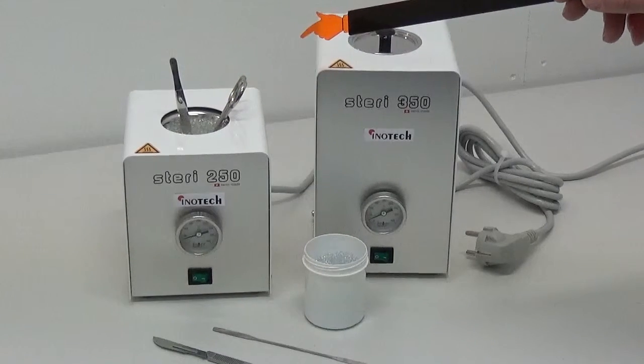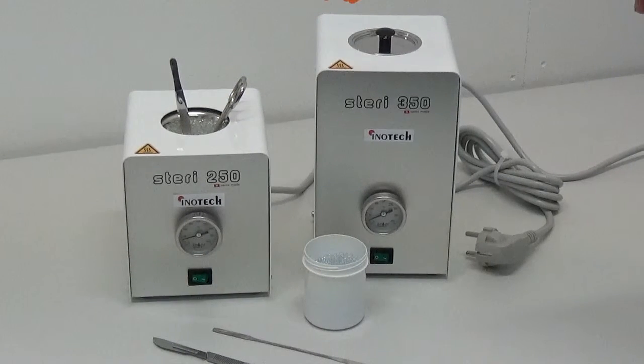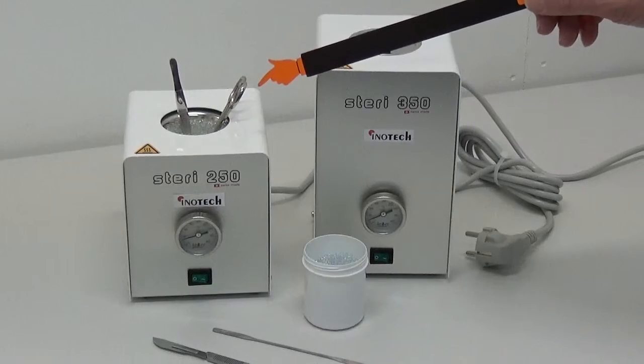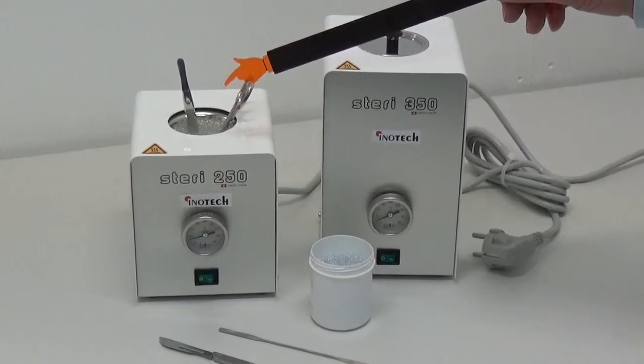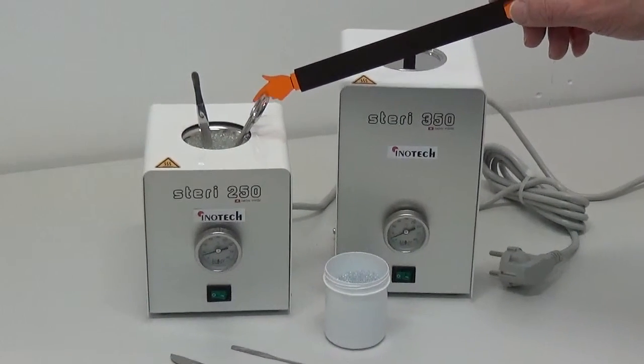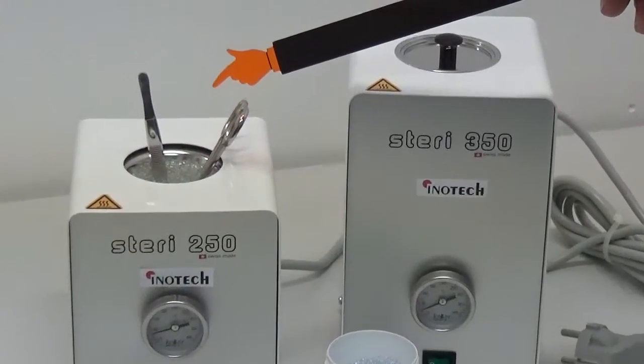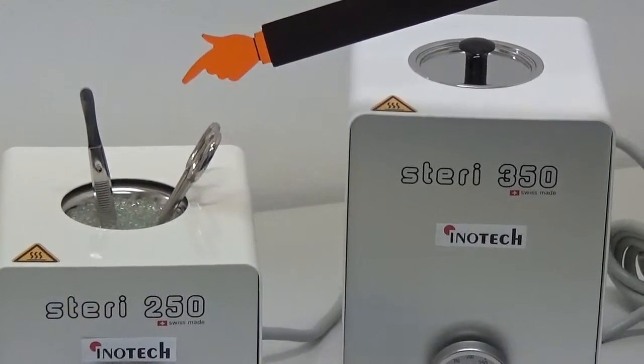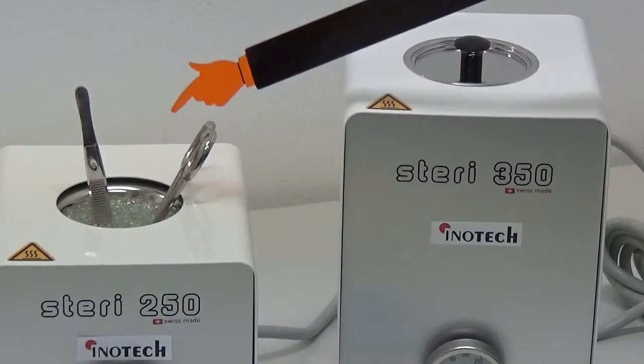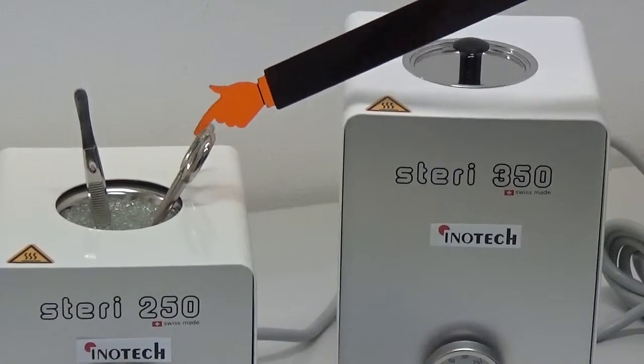250 degree glass beads will completely destroy within 10 to 15 seconds microbes and spores on the surface of metal or glass instruments.